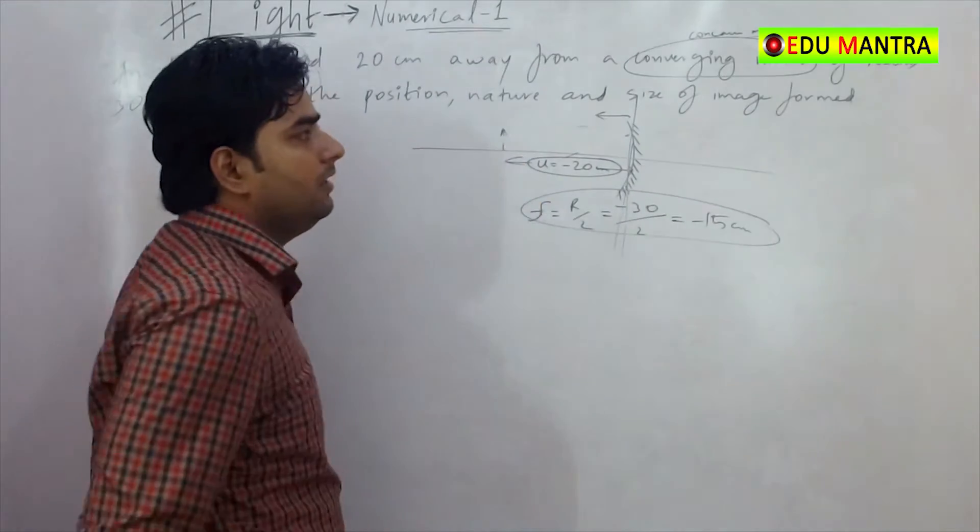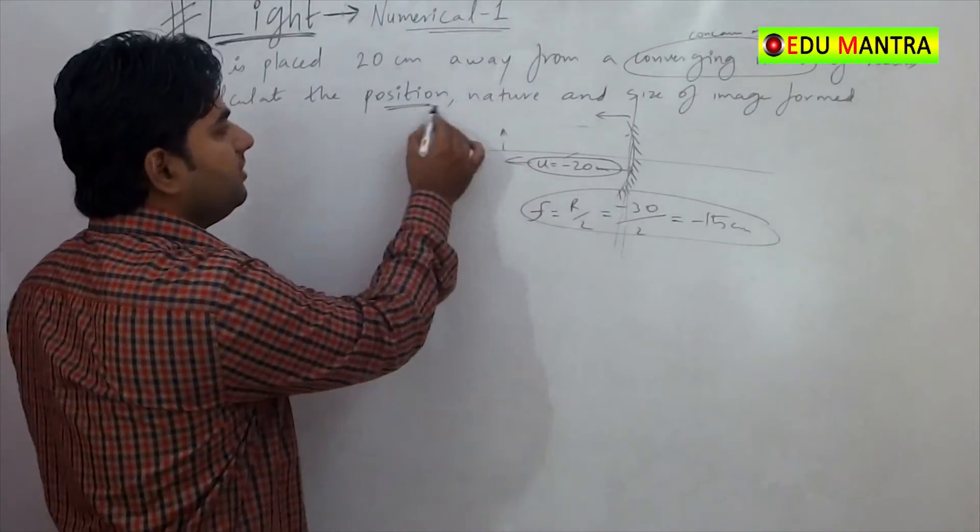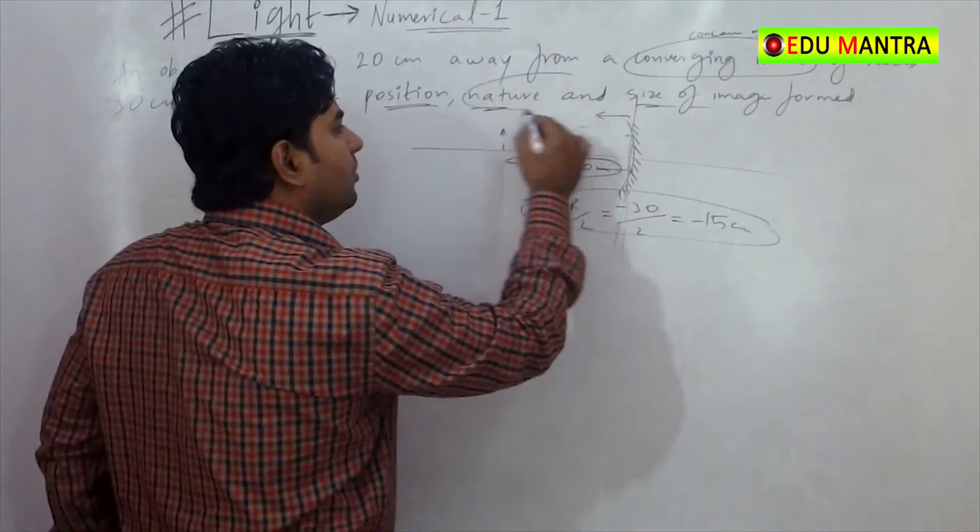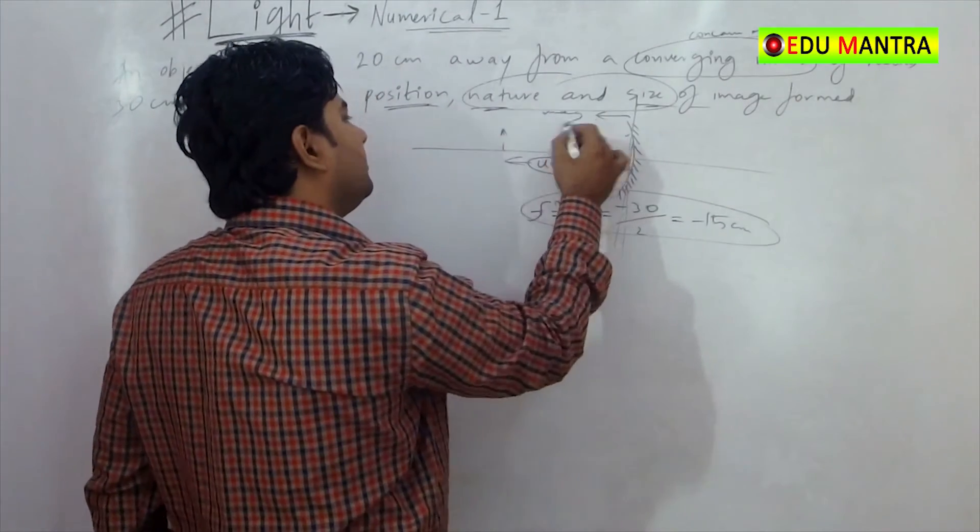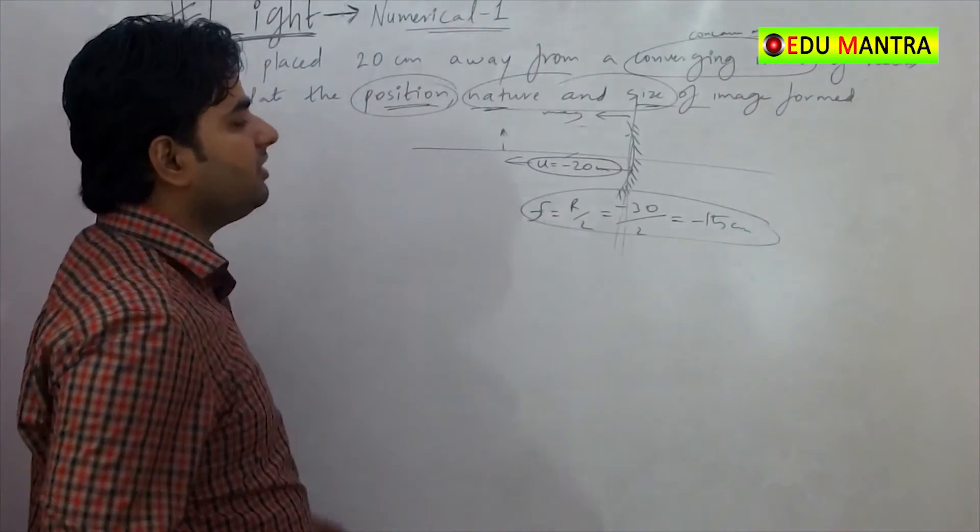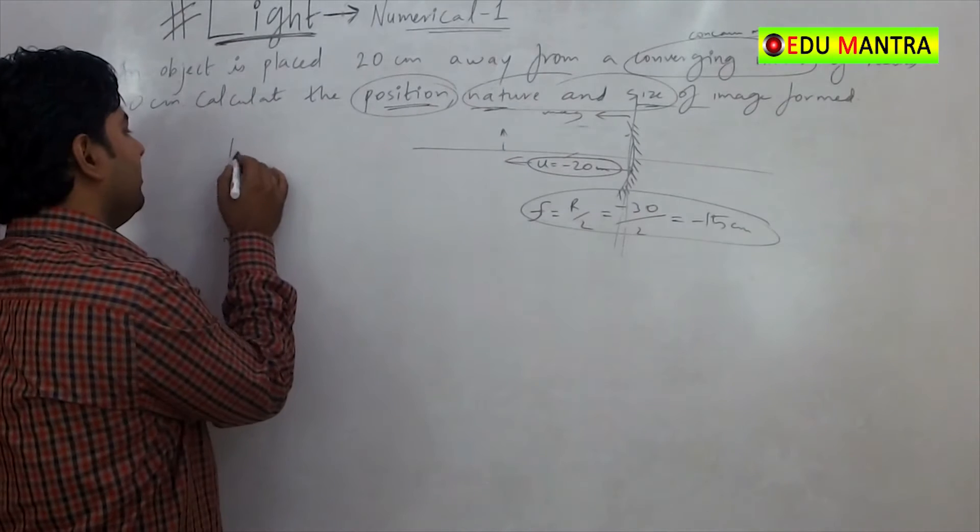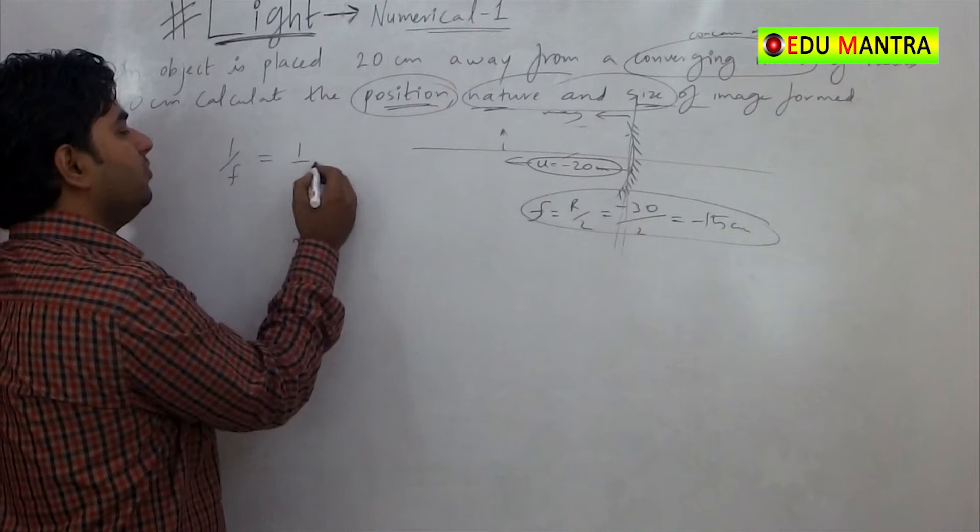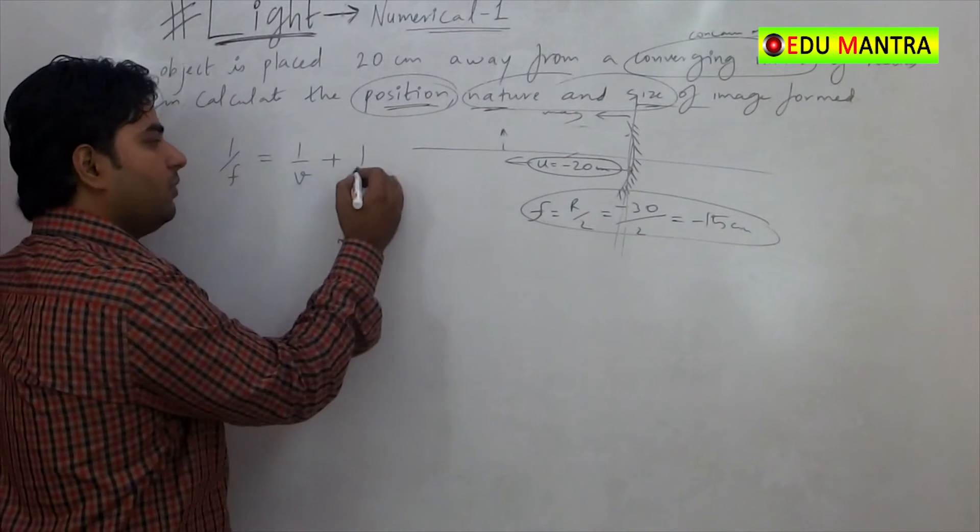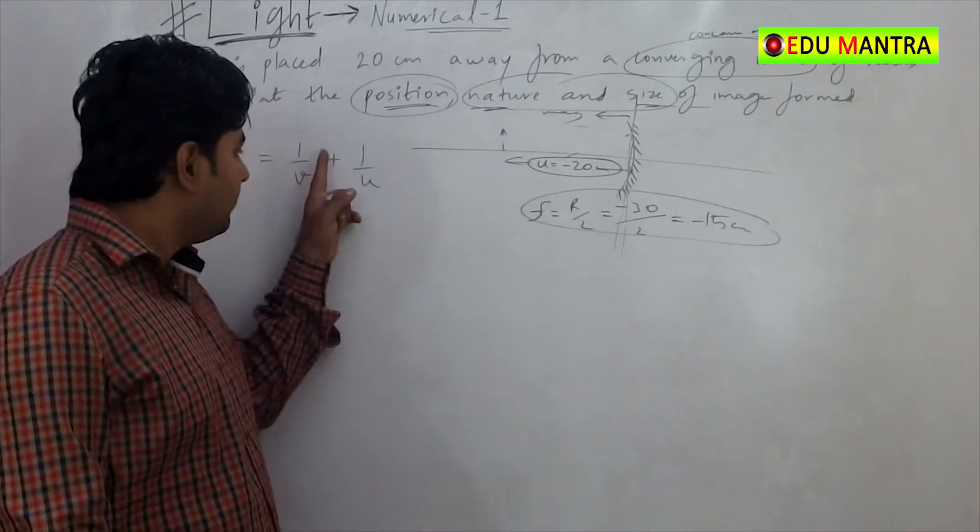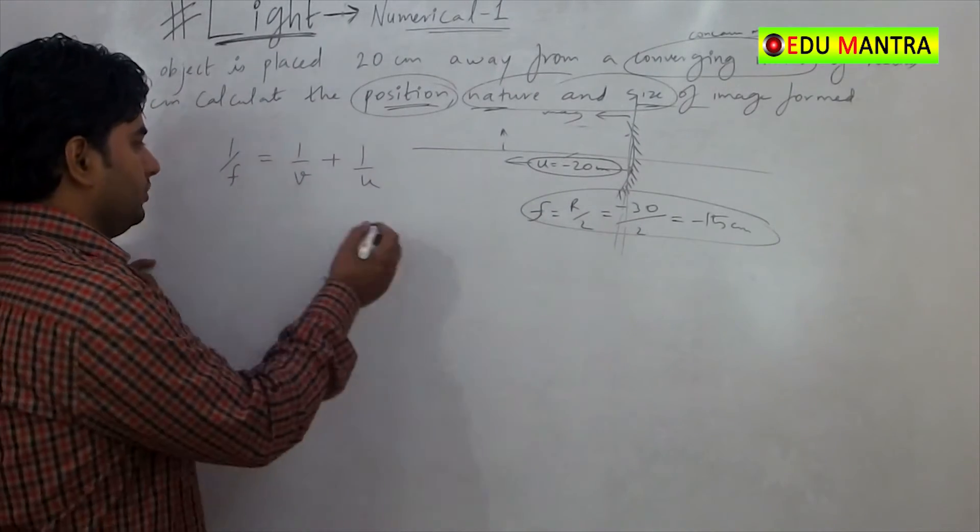This is our f. We have to find position, nature and size of the image. For nature and size, we will use magnification. First, for position, we use mirror formula. So, we have mirror formula: 1 by f is equal to 1 by v plus 1 by u.